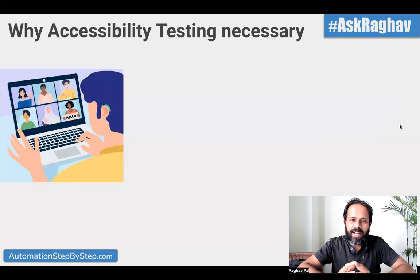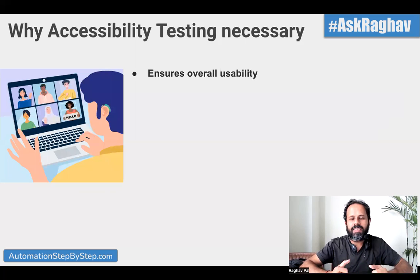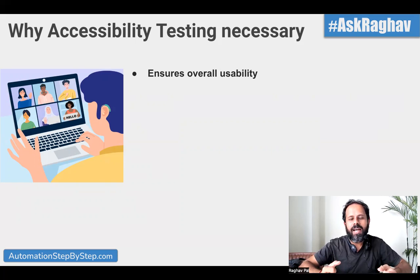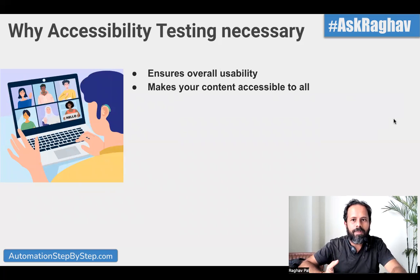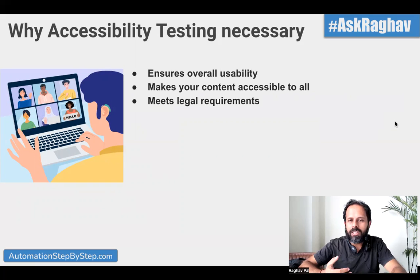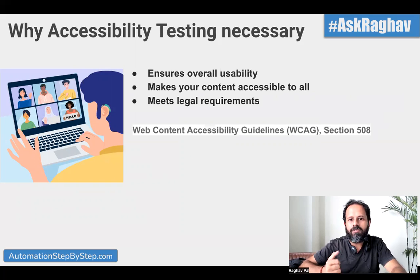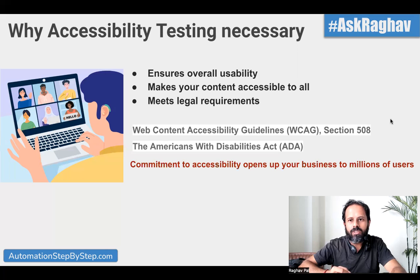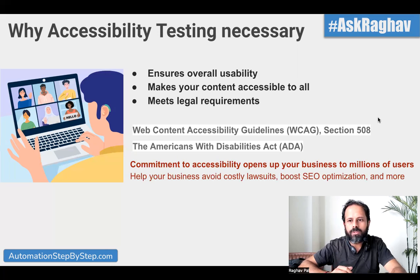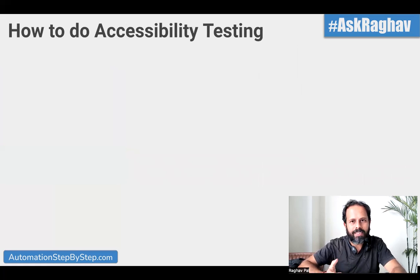Why do we need accessibility testing? First, it makes our application accessible to more users. There are a lot of people with special needs, and it ensures the overall usability of our application, making the content usable for all. It also enables us to meet legal requirements. There are international bodies like WCAG — the Web Content Accessibility Guidelines — and the Americans with Disabilities Act. It ensures our application meets those standards and guidelines, helps businesses avoid costly lawsuits, and also increases usability and SEO optimization.